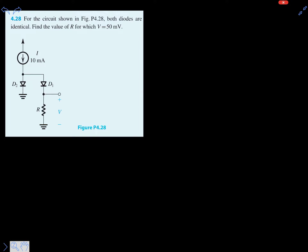Hi friends, let's solve one more problem on diode circuits. It is asking: both the diodes are identical, find the value of R for which the voltage V is equal to 50 millivolts.